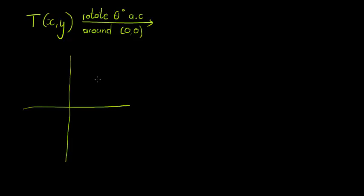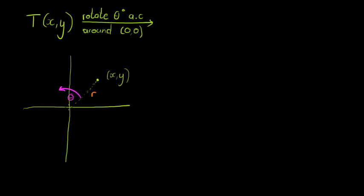If I rotate a point around another point, what I do is I connect those two points with a straight line. So this is the point (x, y), and then from there in the direction indicated — anti-clockwise — I measure off the angle of rotation, in this case theta degrees. Then I take the same distance; let's call this distance from the origin R, for radius.